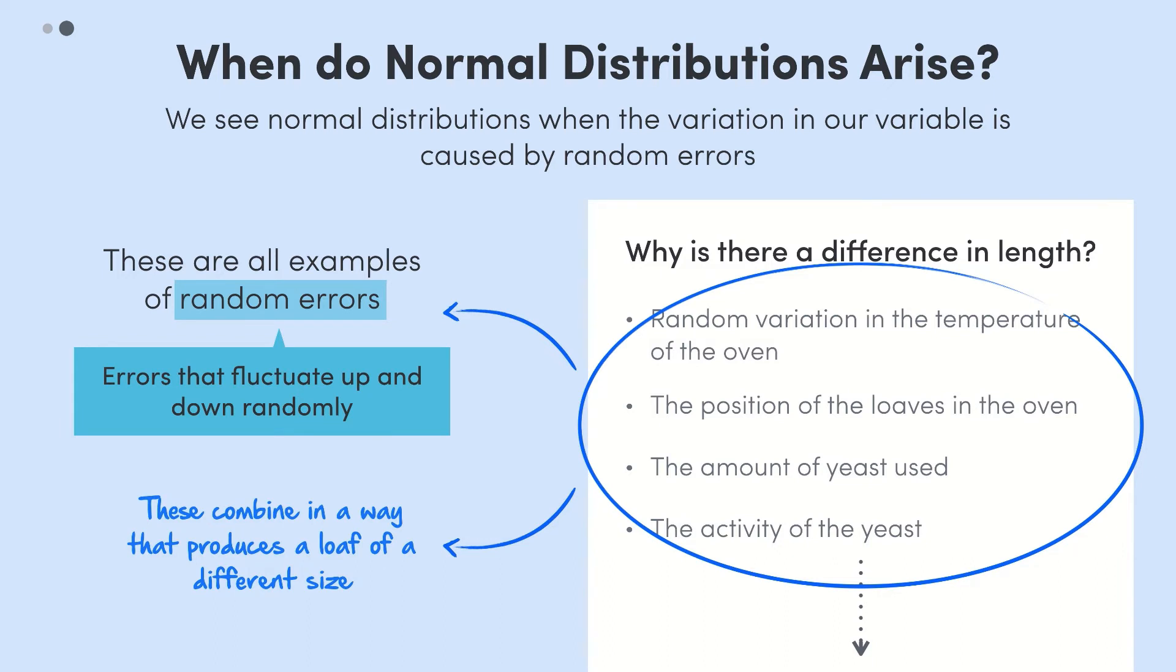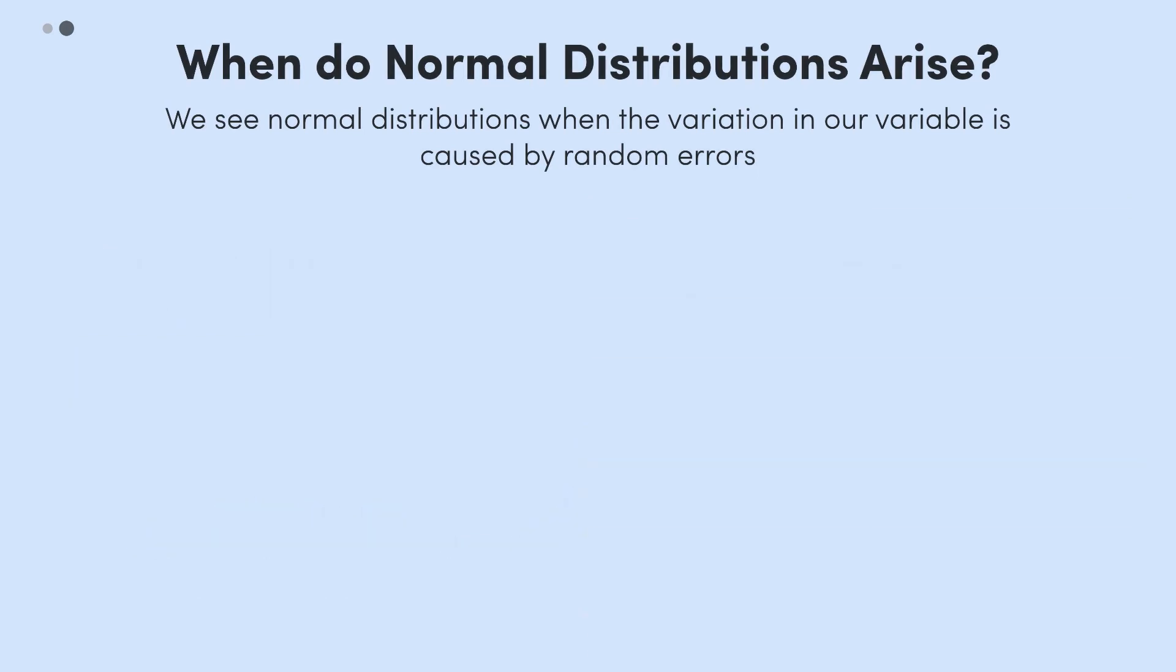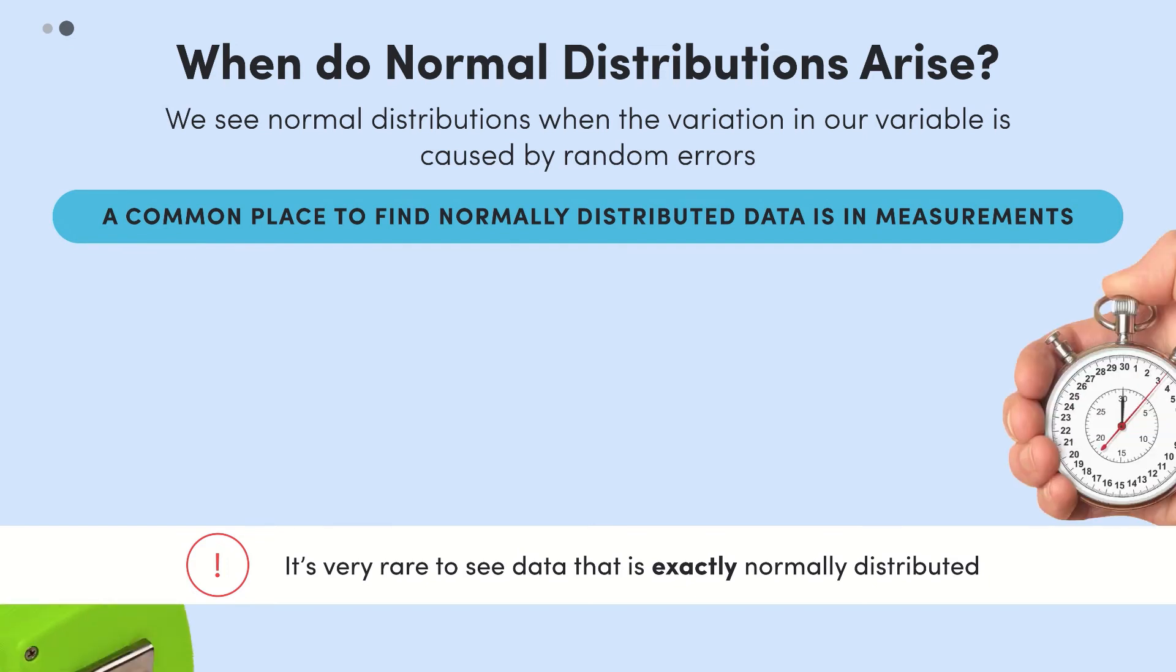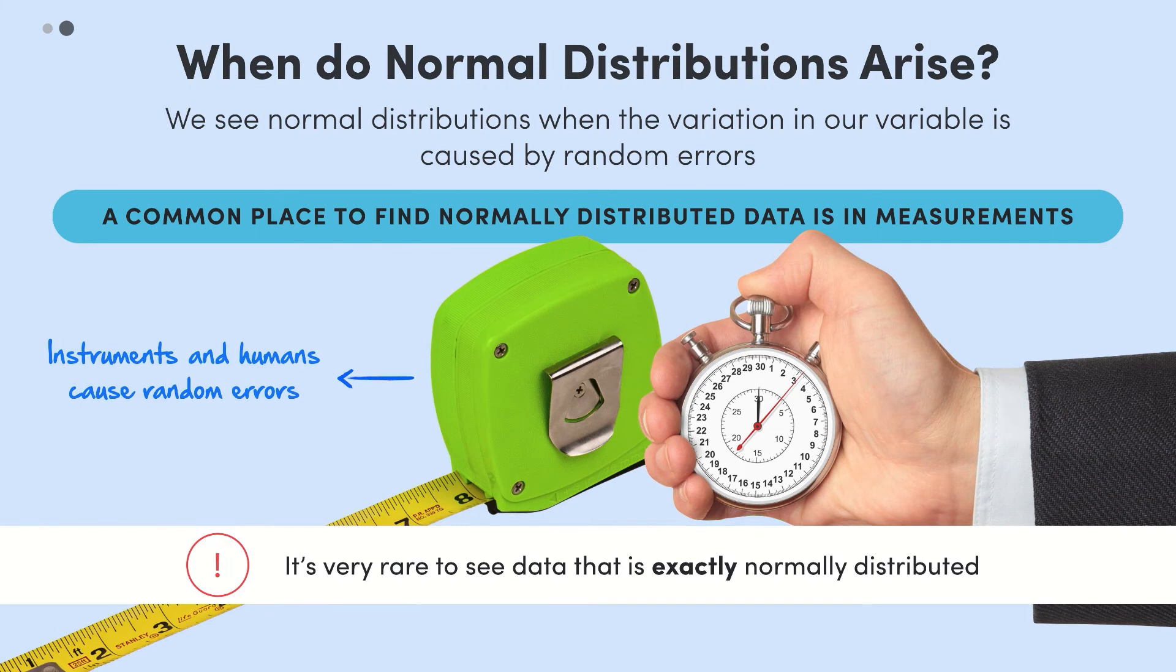In what types of situations are we likely to see normally distributed data? Well that's a great question. In reality we almost never see data that is exactly normally distributed, because a normal distribution is technically perfectly symmetrical. But we do come across data that is approximately normally distributed. A common place to find normally distributed data is in measurements.